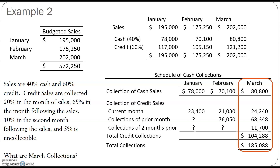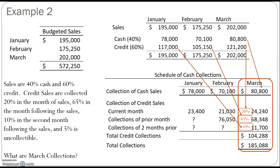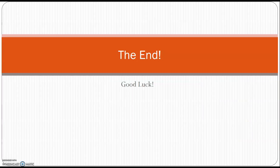Taking our credit plus cash collections together, we can determine that we would expect to collect $185,088 in March. To summarize: in March we collect the cash sales from March transactions, 20% of credit sales from that month, 65% of credit sales from February, and 10% of credit sales from January. Each month's sales is represented in our March calculation. The total expected March cash collections are $185,088. I hope that helps you understand how to calculate cash collections based on sales information — good luck on your problems.